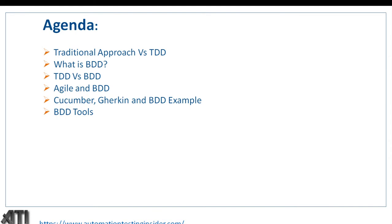Let's get started with the agenda. We'll talk about the traditional approach versus TDD (Test Driven Development), what is BDD (Behavior Driven Development), and the difference between TDD and BDD. We'll also discuss how BDD relates to agile methodology, the Cucumber tool and Gherkin language, a BDD example, and different BDD tools available in the market.